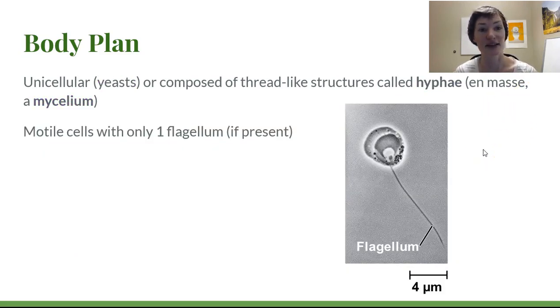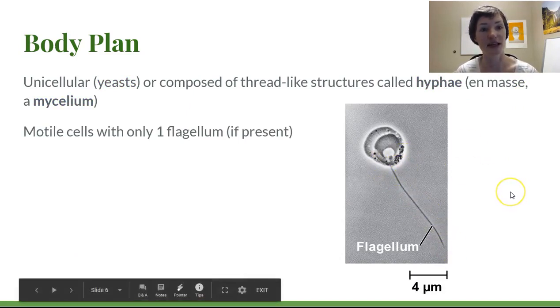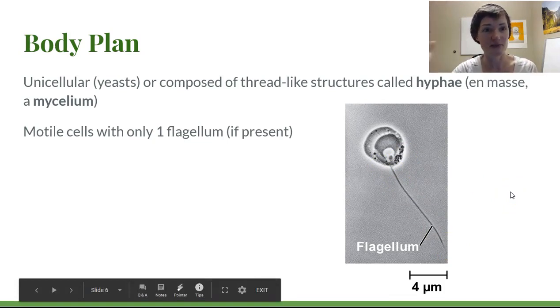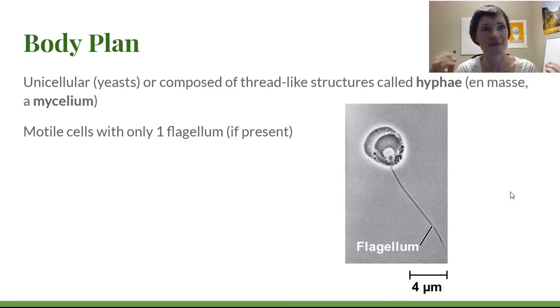They have motile cells with one flagellum. So a flagellum is this movement-oriented cellular component. Humans have, if we do have motile cells, they only have one flagellum. So sperm. That's what you'd be thinking of there. A sperm cell is motile and it has a single flagellum that doesn't have any ornamentation on it. It's called a whiplash flagellum. Fungi have the same thing.